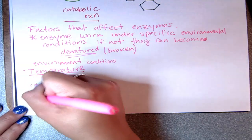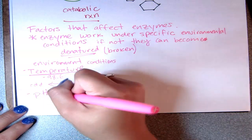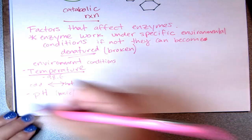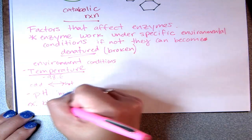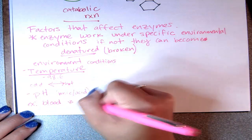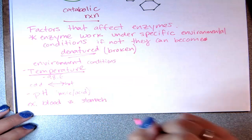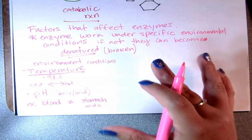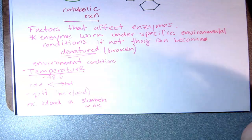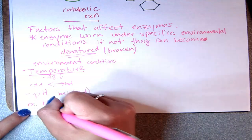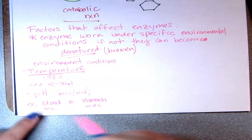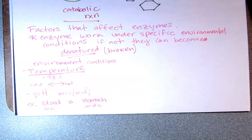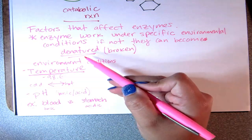The other environmental factor is pH — how basic or acidic something is. Enzymes in your blood versus enzymes in your stomach are a good comparison. Your stomach is very acidic, so stomach enzymes won't do well outside those conditions. Your blood is slightly basic, so putting blood enzymes into the stomach would denature or break those enzymes.